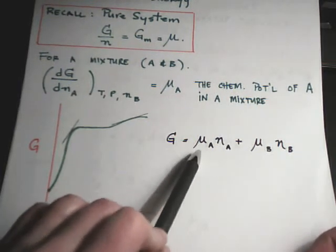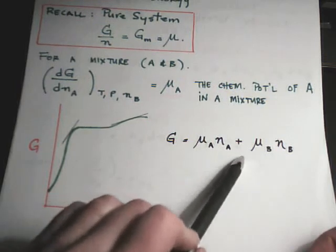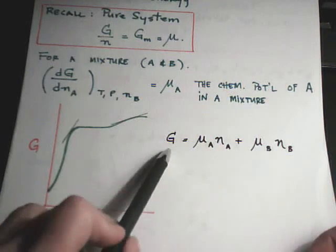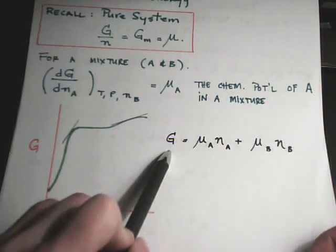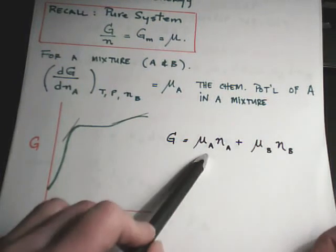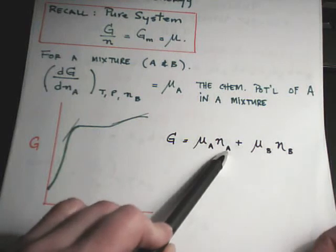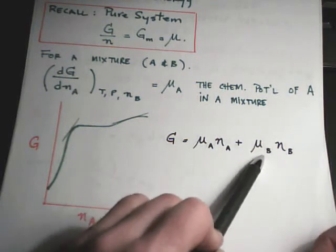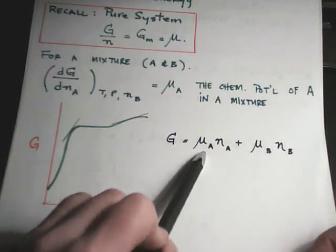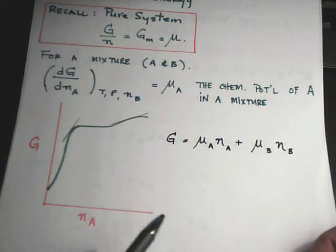G for the full mixture is equal to the number of moles of A times the chemical potential of A, plus the number of moles of B times the chemical potential of B. You'll recognize this form as very similar to that of total volume, where we had partial molar volume times number of moles for each component. But here it's a partial molar Gibbs — or chemical potential.